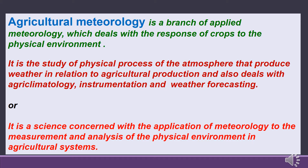Agriculture meteorology is a branch of applied meteorology which deals with the response of crops to the physical environment. It is the study of physical processes of the atmosphere that produce weather in relation to agriculture production, and also deals with agri-climatology, instrumentation and weather forecasting. It can also be described as the science concerned with the application of meteorology to the measurement and analysis of the physical environment in agricultural systems.